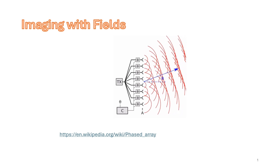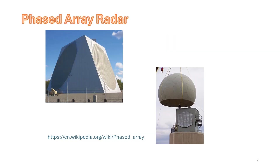Another slide from Episode 28 looked at phased array radars, where at radio frequencies one can simply create a radio receiver and scan it electrically, then reconstruct the image from the received field. A big point of the last two chapters has been that we don't have this luxury at optical frequencies.